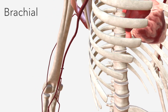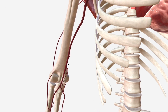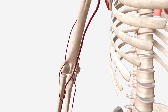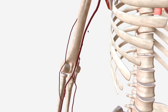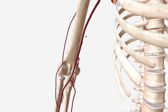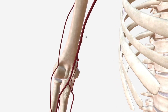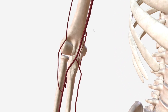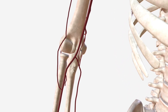The brachial continues down the medial aspect of the upper arm, medial to the biceps brachii muscle, adhering quite closely to the distal end of the humerus, before terminating by bifurcation into the ulnar and radial arteries in the cubital fossa of the elbow.